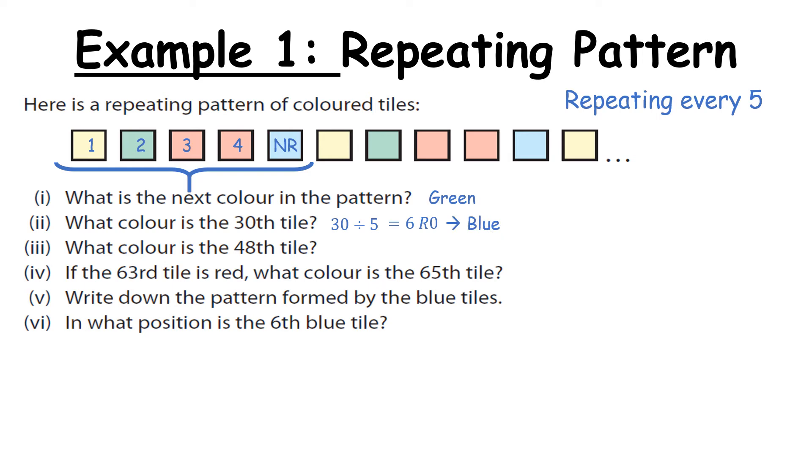What colour is the forty-eighth tile? So same logic. Forty-eight divided by five. When we do that we get nine remainder three which means it will be red. It then says if the sixty-third tile is red, what colour is the sixty-fifth tile? Now if it was any other colour it might be easier to do but because there is two reds here it's not going to be hugely helpful. However you might have discovered because we're repeating in fives anything that ends in a three will represent the three that we have labelled above, which means anything that ends in a five will be linked to this blue non-remainder. Now if that wasn't clear we could just use the same logic we have been doing and that is sixty-five divided by five. That gives me thirteen remainder zero which tells me it was blue.